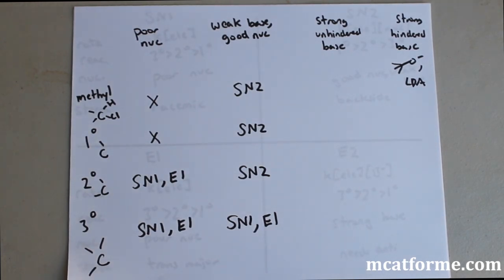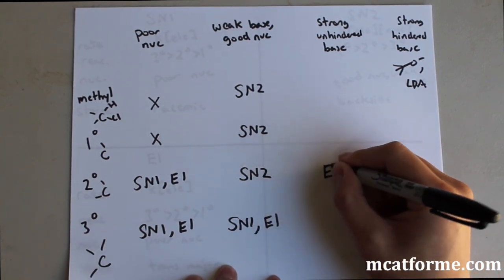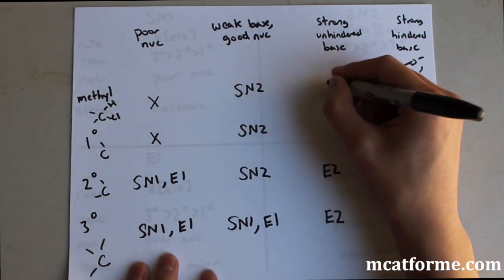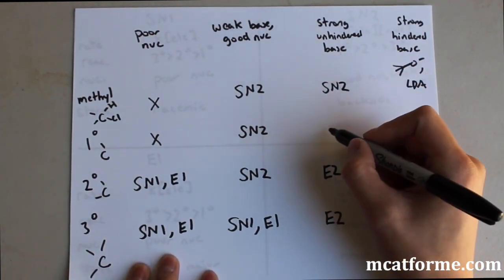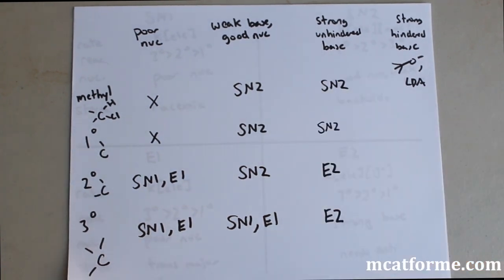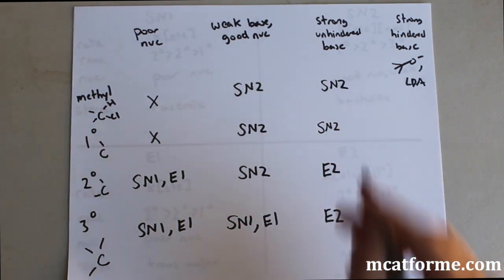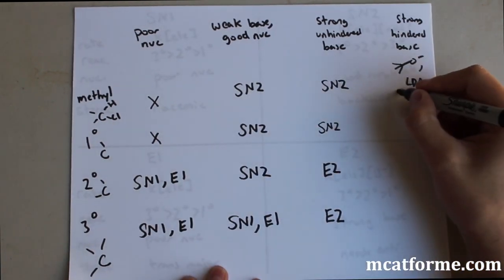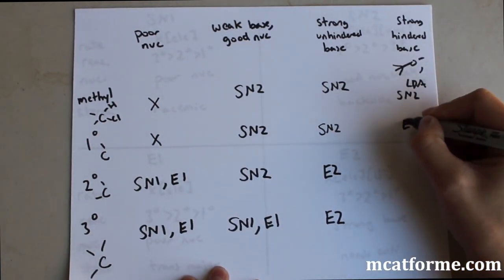Now for strong unhindered base like OH- and NH2-, what we should remember is E2 when we're thinking of bases. But in this case, this is when it gets kind of tricky. For secondary and tertiary, we're going to have E2 definitely. But for primary and methyl, this is when it gets tricky. For primary, we're going to see that it's probably going to be SN2. We'll also see a mixture of E2 in there. But for methyl, it's definitely SN2. This one is probably one that we wouldn't quite expect. But for the strong hindered, it's exactly what we should expect.